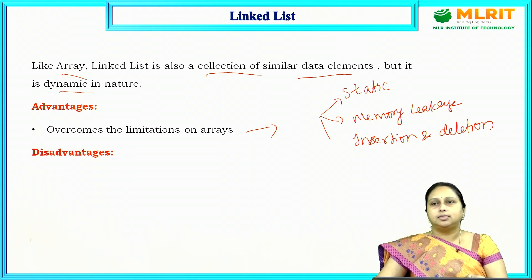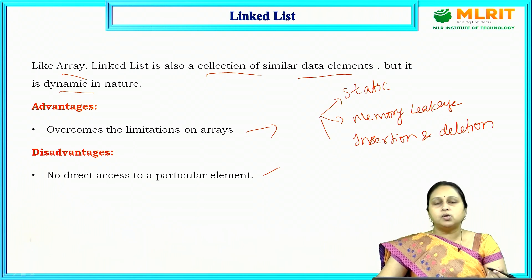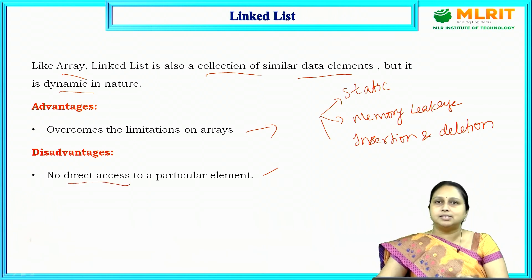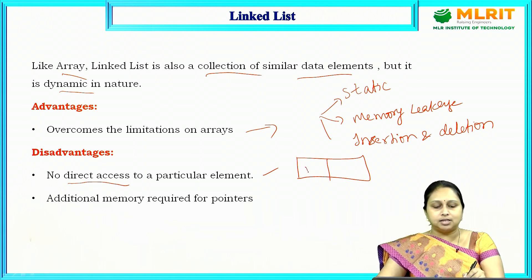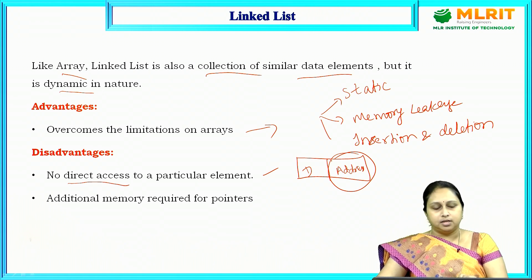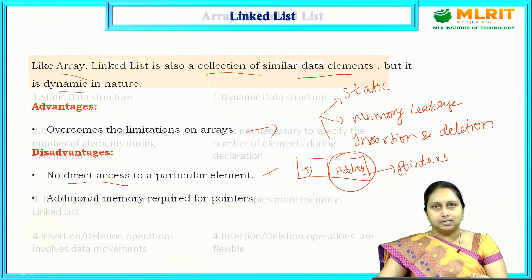The disadvantages of linked list: we do not have direct access to a particular element because memory is allocated dynamically. Because of that we are unable to find a particular element's index, so we cannot access elements directly. Also, it requires additional memory for pointers — the node structure has two parts, one for data and one for the address, so there is some extra memory usage and wastage.